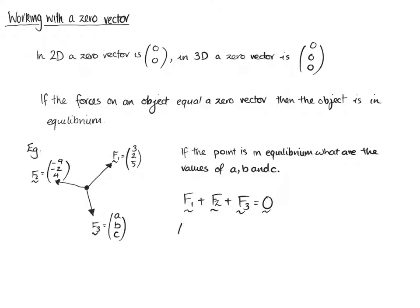That means that (3, 2, 5) plus (-9, -2, 4) plus (A, B, C) equals (0, 0, 0). If we collect the first two, F1 and F2 together, we get 3 take away 9, so we get -6 plus A.